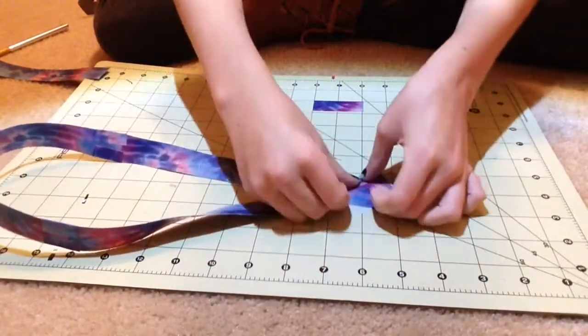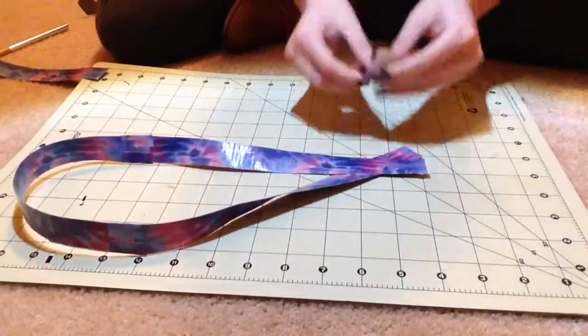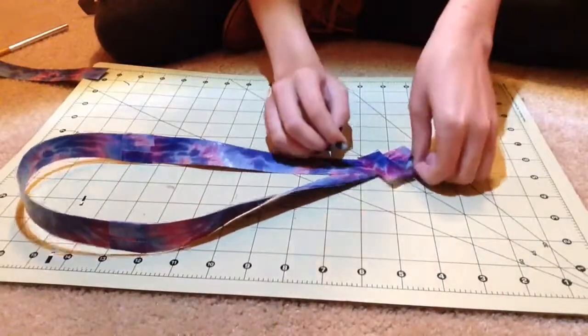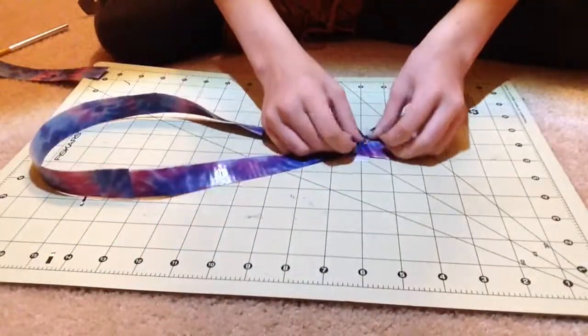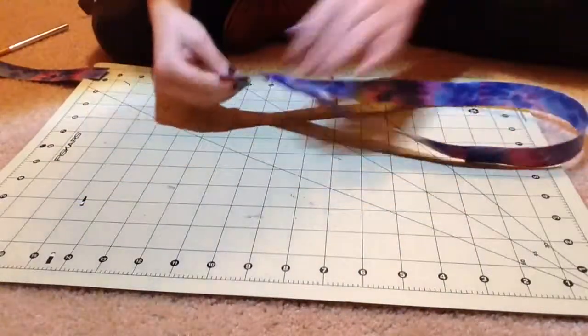Tape around. If your piece of tape doesn't make it all the way around, just take another piece of tape and go over it, like so. Push it over. And now you have your basic shape of your lanyard.